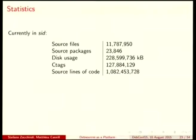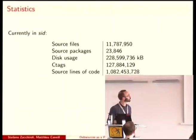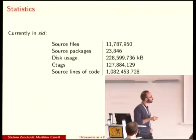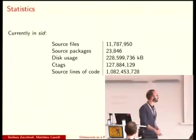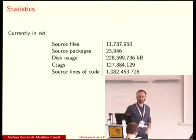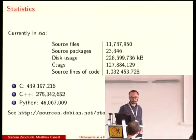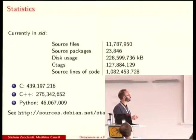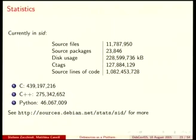As an example, these are stats for SID as of yesterday. In SID we currently have about 11 million source code files and 23,000 source packages. It will take 228 gigabytes of disk to have all the source code on your machine. About 127 million developer-defined symbols, and a bit more than a billion lines of code. This is what we ship when we ship SID to our users. The most popular languages in SID: the top is C, then C++, then Python. And it wasn't the case a few years back.